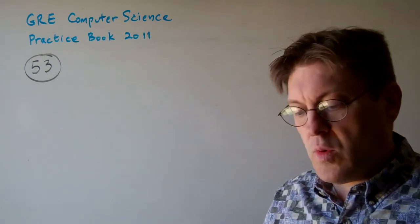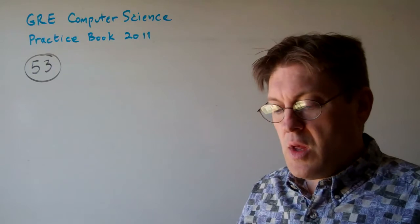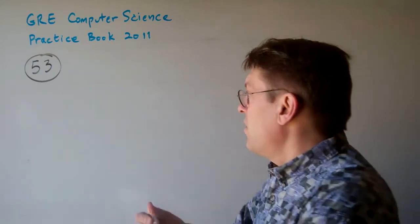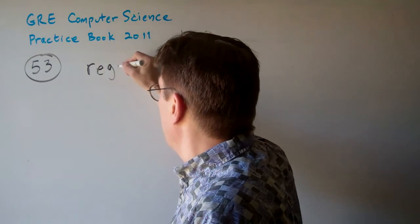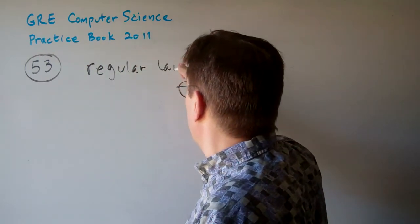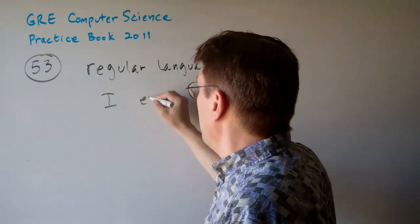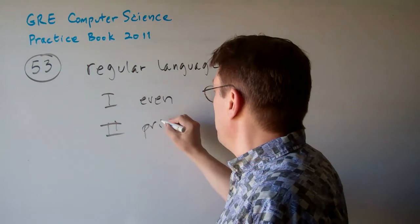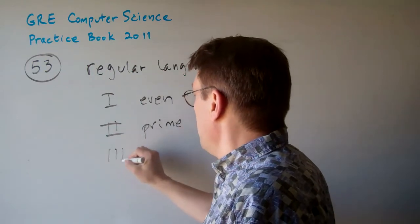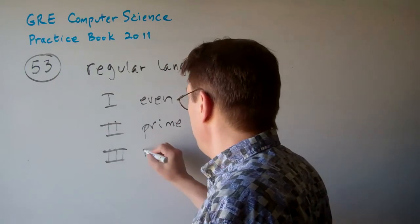So there's three different languages. One of them is a word is an element of L, which is this regular language, such that the length is even. So one, this is going to be regular language. One is the length is even. Two is the length is prime. And three, it is an integer power of 2.